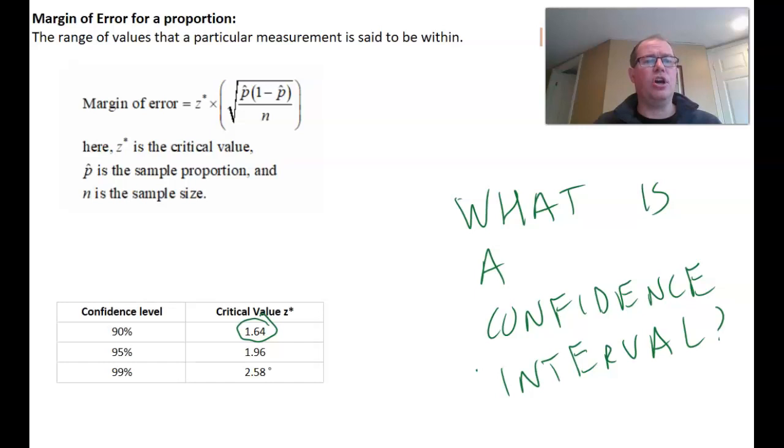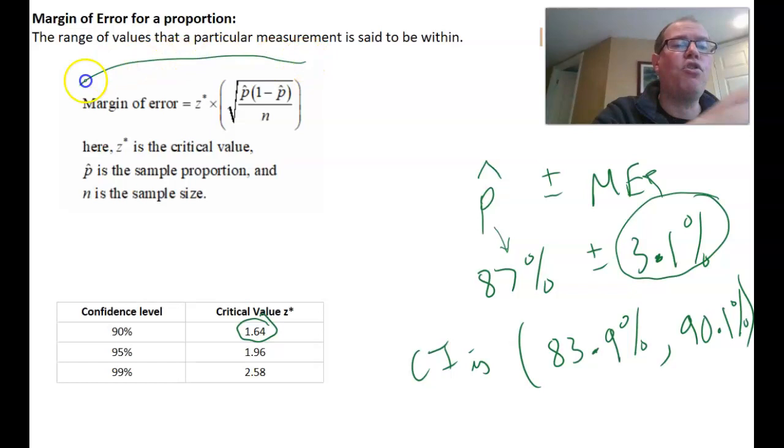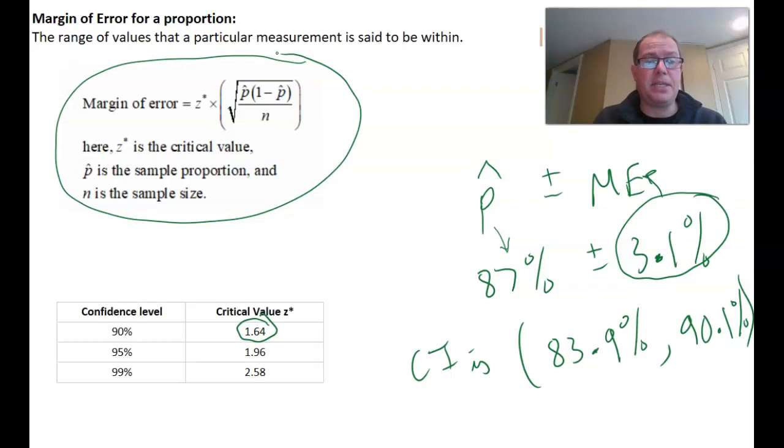What we haven't done is shown the margin of error. In that example, we had a percentage of people that were happy after changing careers, and that was 87% with a margin of error of 3.1%, giving us a confidence interval of 87% plus or minus 3.1%. This 3.1% is called the margin of error. In this video, we're going to use the margin of error formula to actually work out 90%, 95% and 99% confidence intervals.